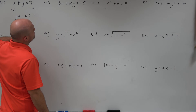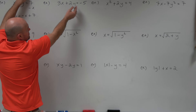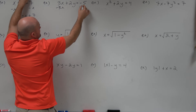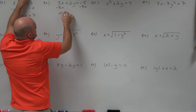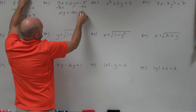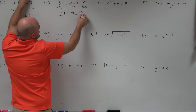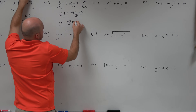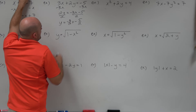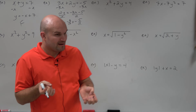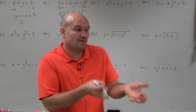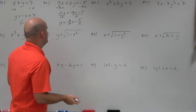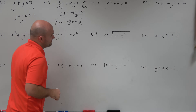Into the next equation, we have some different numbers, but if we just follow the same rules, we get 2y equals negative 3x minus 5. Divide by 2 on both sides, and y equals negative 3 halves x minus 5 halves. By solving for y, it's still producing y uniquely, so therefore this is just a function.